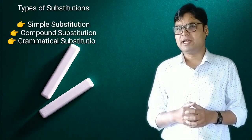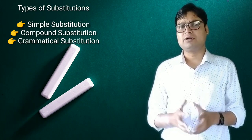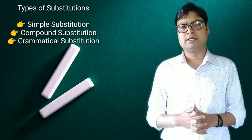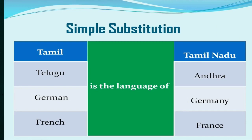Now let's discuss the types of substitution. H.A. Palmer gave many types, but here we are going to study three types. The first one is simple substitution. As you can see on your screen, on the extreme left-hand side of the table there are words like Tamil and Telugu, while the middle part consists of 'is the language of' — this is a single prototype structure.